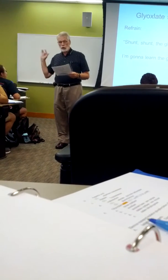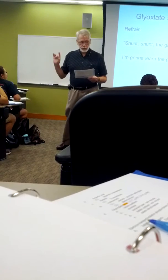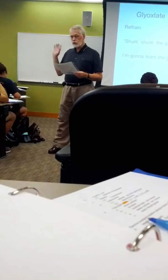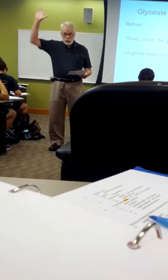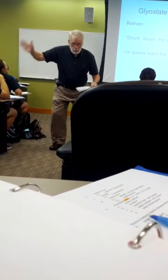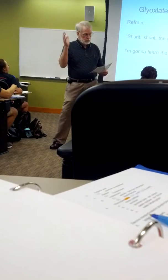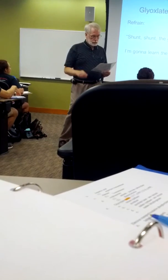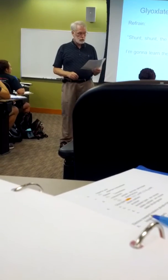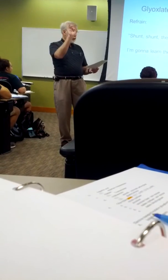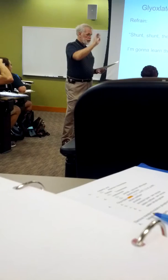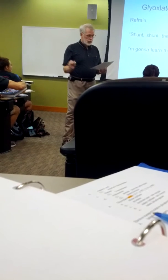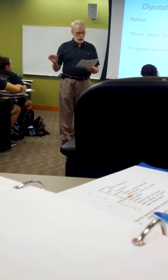Where will you find the glyoxylate shunt? On page 411 is the glyoxylate shunt. Shunt, shunt, the glyoxylate shunt. I'm going to learn the glyoxylate shunt. Where do we look for the glyoxylate shunt? Right inside of mitochondria is the glyoxylate shunt.